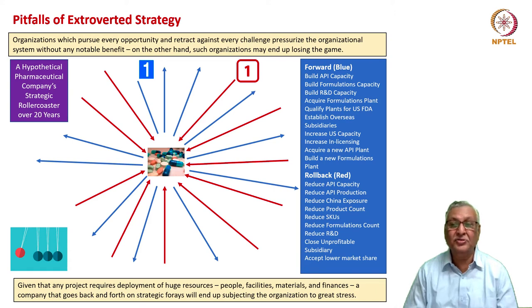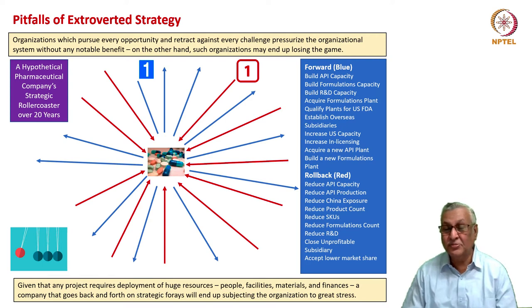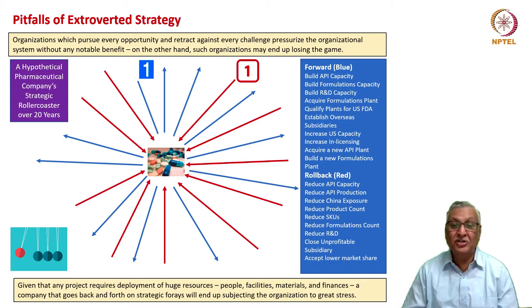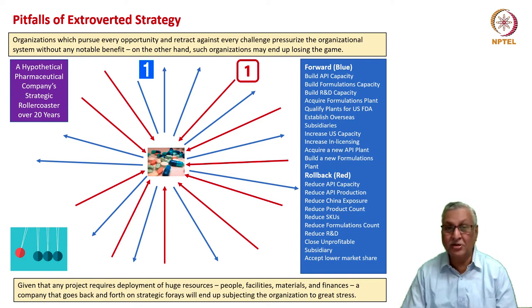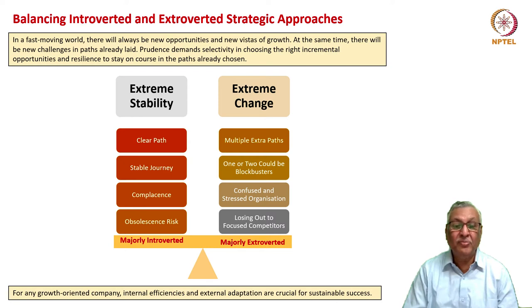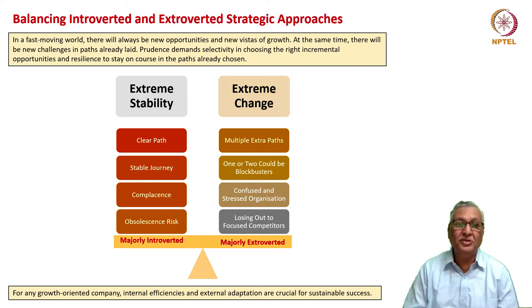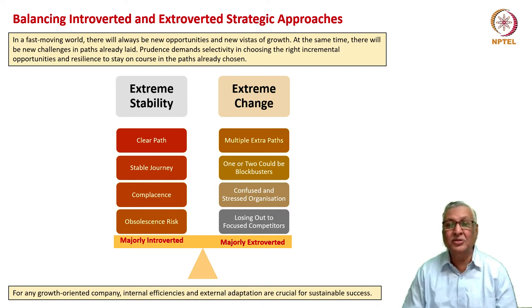There will be great stress in the organization. Forward moves must be thought of with great foresight, experiential wisdom, and data analytics. Once paths are determined, not every external trigger should be taken as a fresh stimulus to alter that path. Prudence demands selectivity in choosing the right incremental opportunities and resilience to stay on course on the paths already chosen.